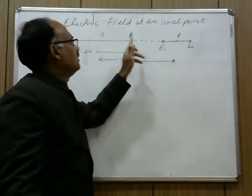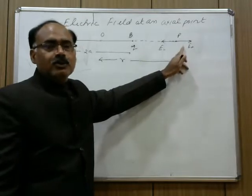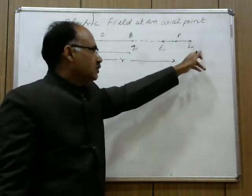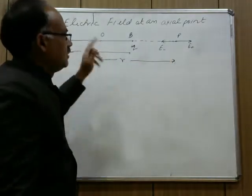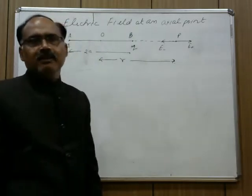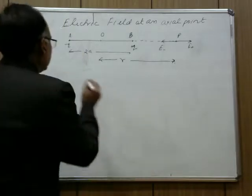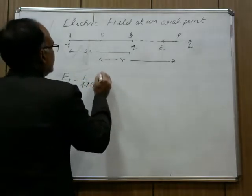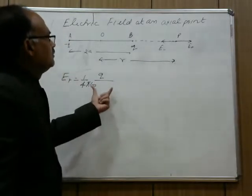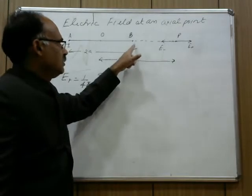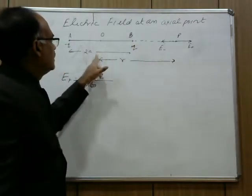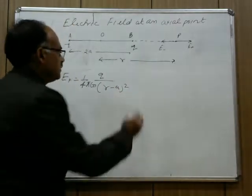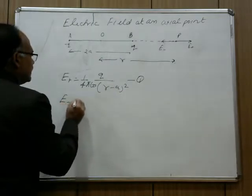The electric field is always directed away from the positive charge and directed towards the negative charge. That is why the direction of E plus is away from plus q, and the direction of E minus is towards the negative charge. The magnitude of E plus — the electric field due to plus q charge — is 1 upon 4 pi epsilon naught, q divided by (r minus a) squared. This is equation 1.